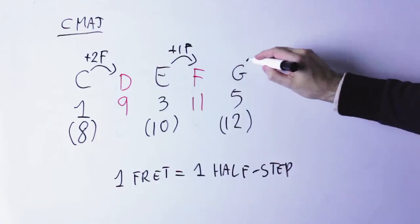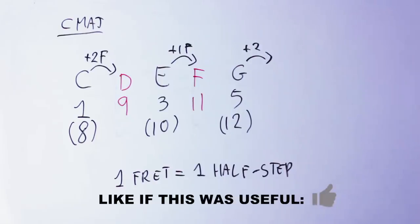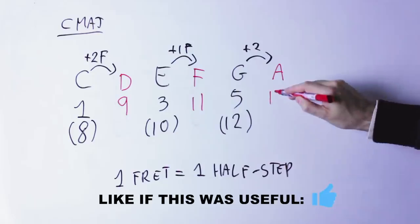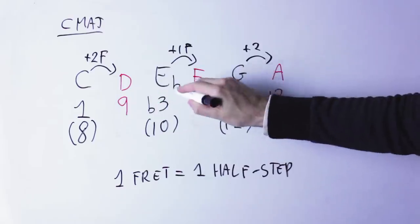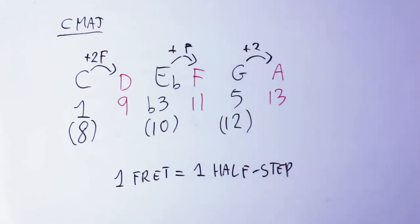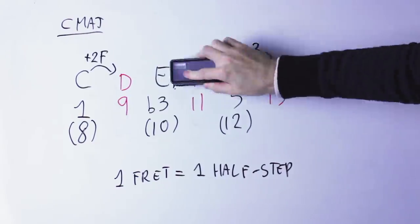we're going to call this note the eleventh, and if we take the note two frets higher than the fifth, which is the A here, we're going to call this note the thirteenth of the chord. The same will work with the minor chord, just remember that in the case of the minor chord, the eleventh is two frets above the third, because we have the minor third here. So now,